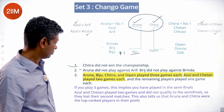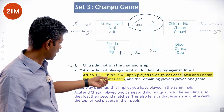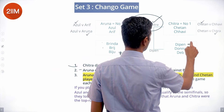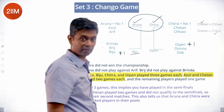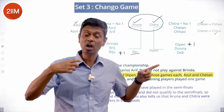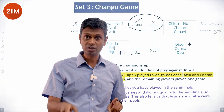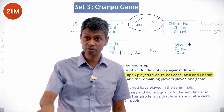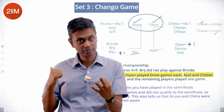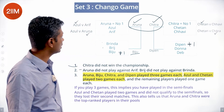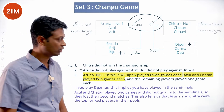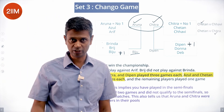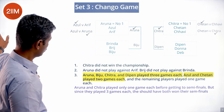Similarly, Dipen played three games but lost in the semi-finals, so he is also not ranked number one in Group D. Dipen beat one of Donna or Deb, then beat the other, then lost to Chitra. So Aruna and Chitra were the number-one seeds; Biju and Dipen were semi-finalists who were not originally ranked first in their groups.